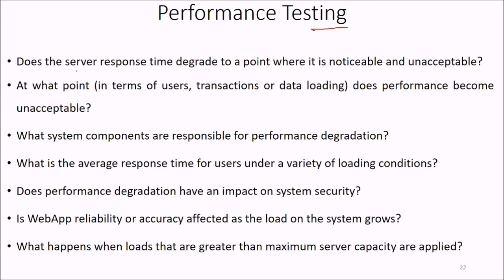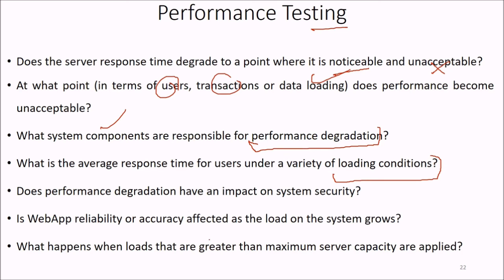In performance testing, performance on the web varies based on connection type, internet type, data rate, and whether you use fiber channels or other media. Key questions include: Does server response time degrade to a point that is noticeable and unacceptable? At what point does performance become unacceptable in terms of user transactions and data loading? What system components are responsible for performance degradation? Is all computation being done server side? What is the average response time under a variety of loading conditions? Does performance degradation impact system security? Is web app reliability or accuracy affected as system load grows? What happens when loads greater than maximum server capacity are applied?